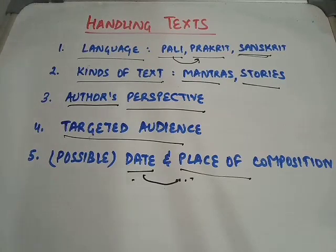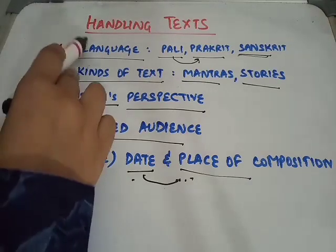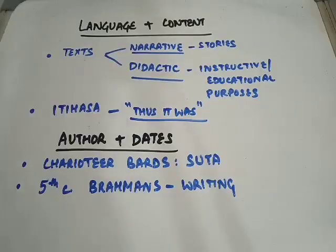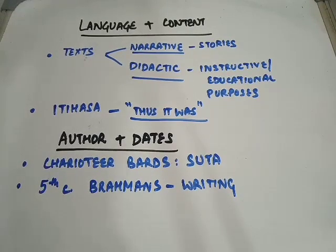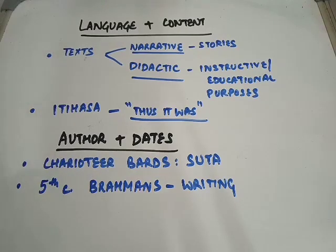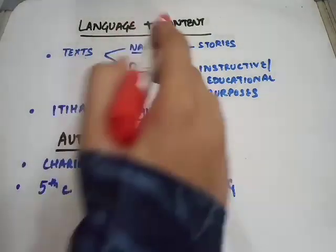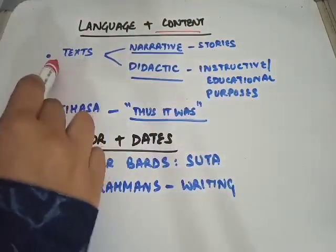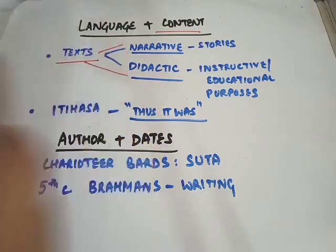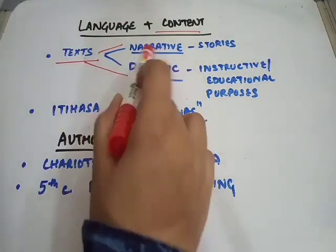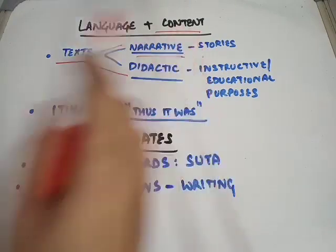Now let's talk about all these aspects in detail. The first topic is language and the content of the text. In terms of language, texts were sometimes written in many different languages and different scripts. For example, in the case of the Mahabharat, there were many regional versions made of the main story. Looking at content, texts can be divided into narrative and didactic.